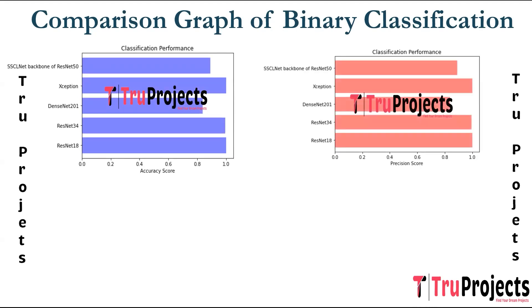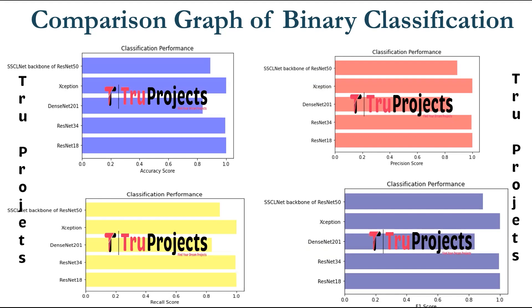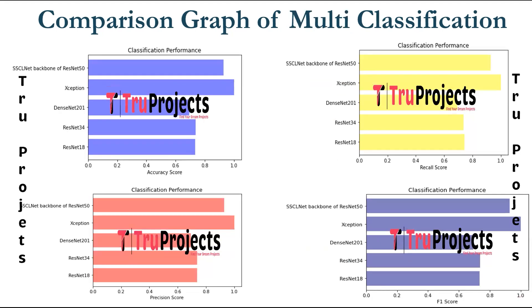Precision is the ratio of correctly predicted positive observations to the total predicted positives, evaluating the accuracy of positive predictions. Recall, also known as sensitivity or true positive rate, measures the model's ability to capture all relevant instances — the ratio of correctly predicted positive observations to the total actual positives. The F1 score is the harmonic mean of precision and recall, providing a balance especially when there is class imbalance. Multi-class classification comparison graphs are also presented, where the model categorizes brain MRI images into pituitary, meningioma, and glioma subtypes.